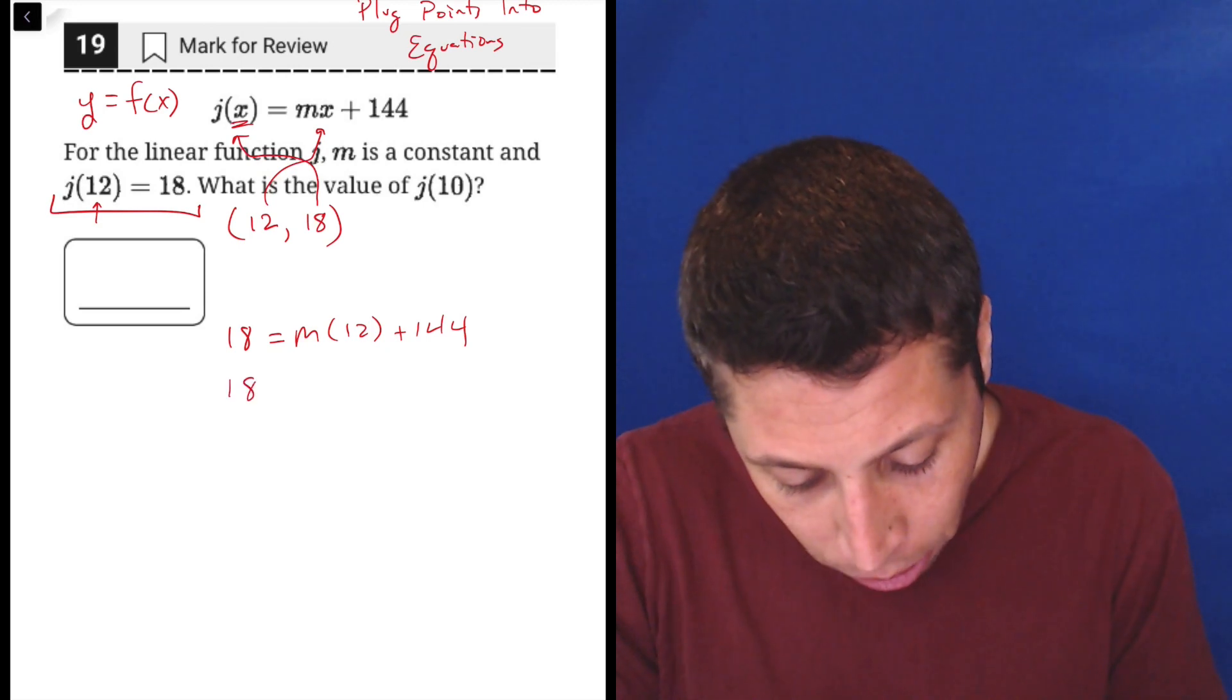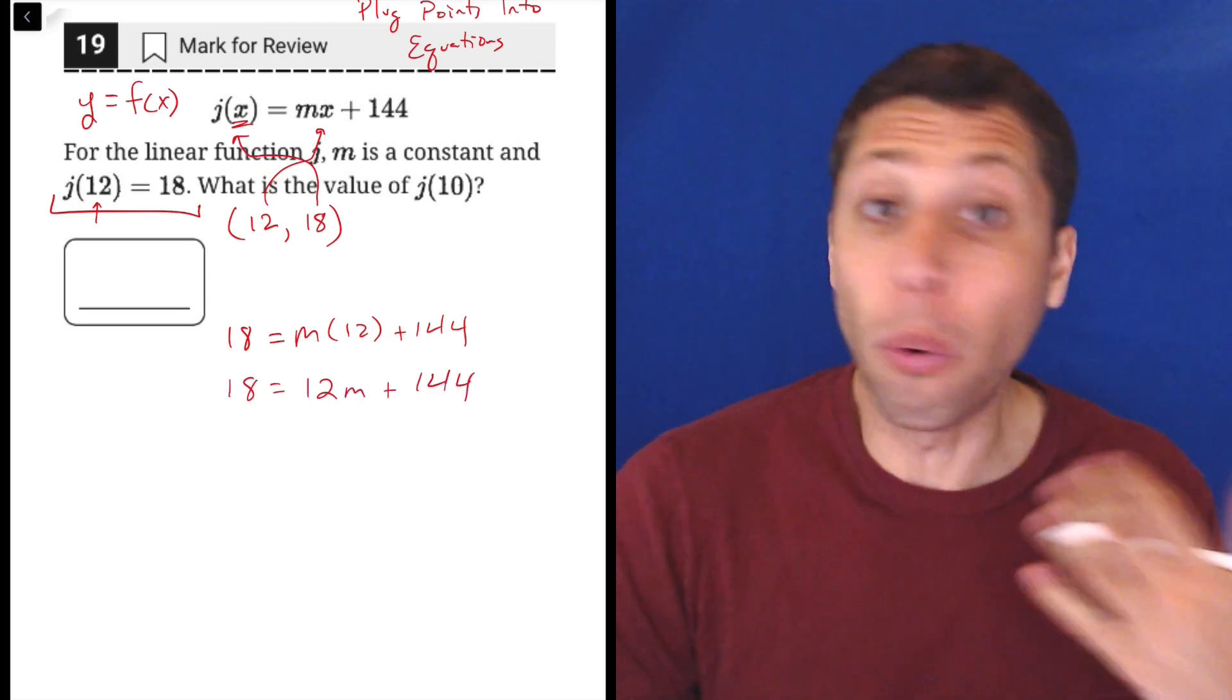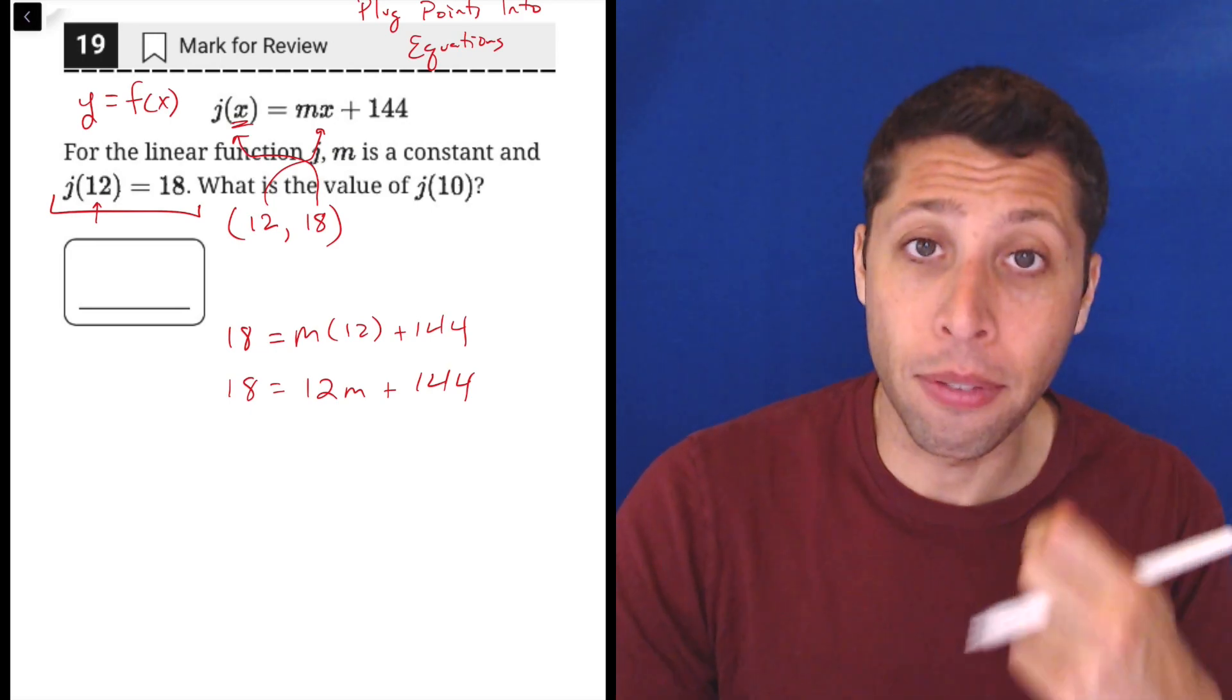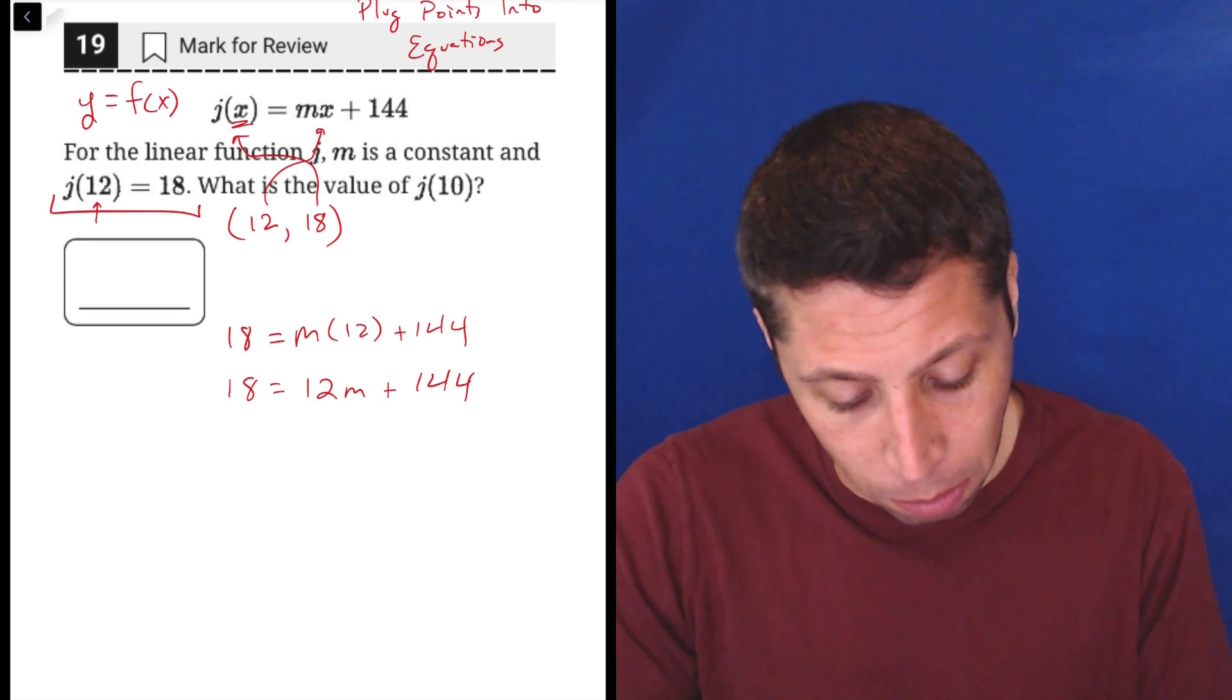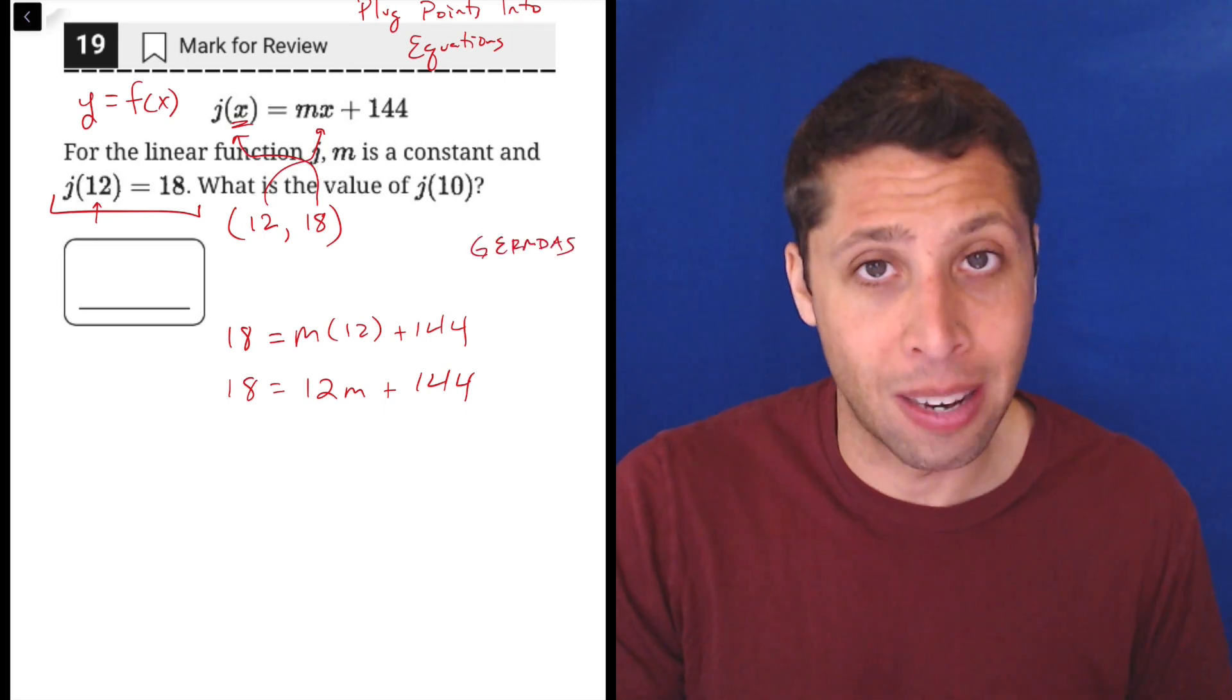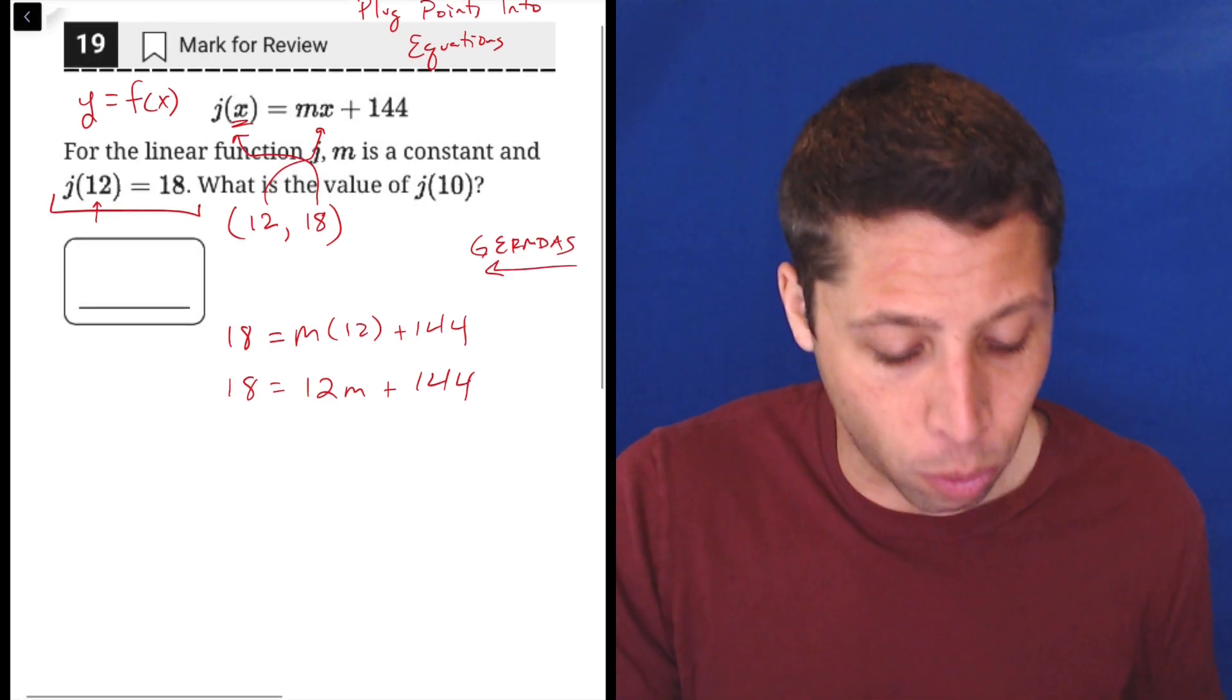So the first thing I might do is just rearrange so that that 12 is in front of the m. That's just good form for algebra. We want to have our coefficient in front of the variable. Then we're going to go through order of operations, and when we do it, remember, we're going backwards. We can't simplify this anymore. We can't do 12m plus 144 because the m is getting in the way. So now we have to go backwards.